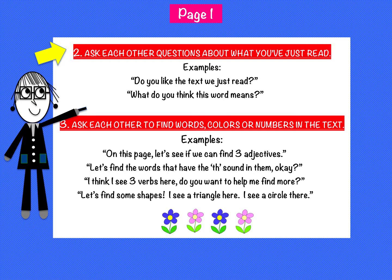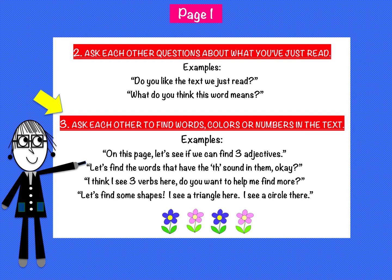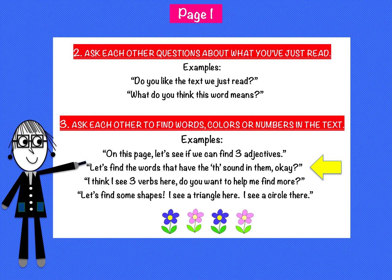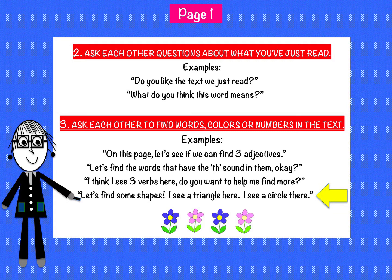Two: Ask each other questions about what you've just read. Examples: Do you like the text we just read? What do you think this word means? Three: Ask each other how to find words, colors, or numbers in the text. Examples: On this page, let's see if we can find three adjectives. Let's find the words that have the TH sound in them. I think I see three verbs here — do you want to help me find more? Let's find some shapes. I see a triangle here. I see a circle there.